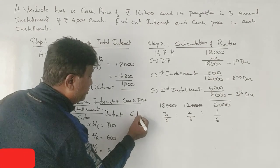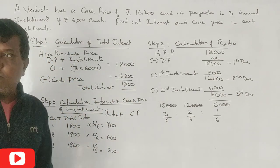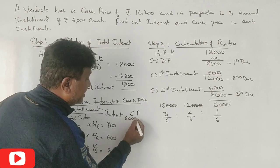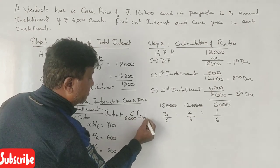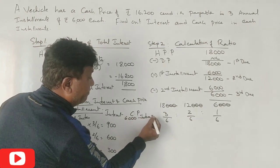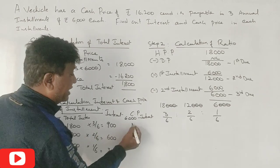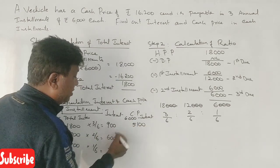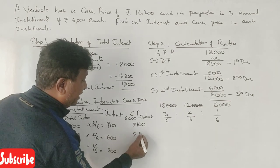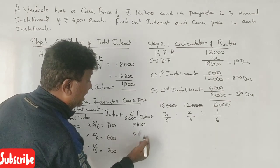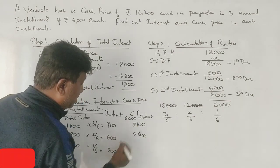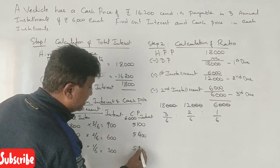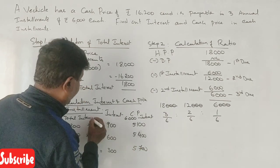Now the cash price of each installment is: installment minus interest. First year: 6,000 minus 900 = Rs. 5,100. Second year: 6,000 minus 600 = Rs. 5,400. Third year: 6,000 minus 300 = Rs. 5,700. This is the cash price of each installment.